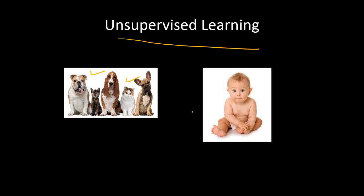But in this case, the baby hasn't seen pictures of dogs and cats separately. So there is no labeling as such — the baby is not able to exactly categorize these two types. The one thing the baby can do is that it cannot say which one is a dog and which one is a cat, but it can at least categorize these animals into similar categories.